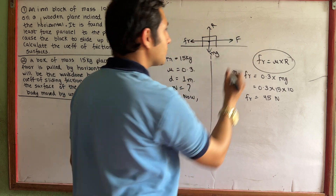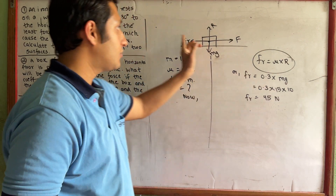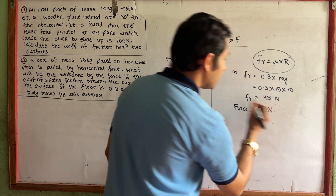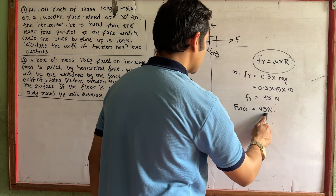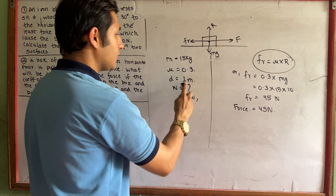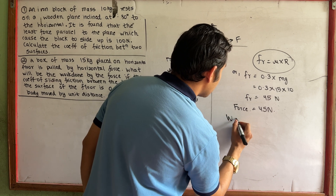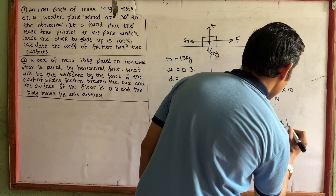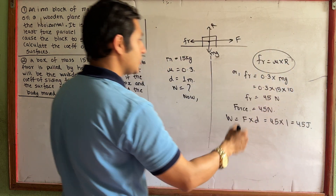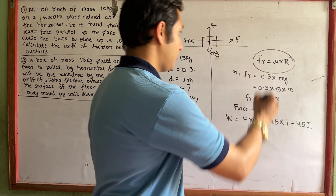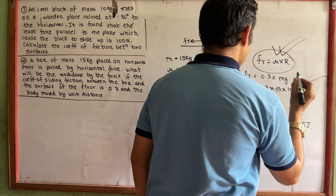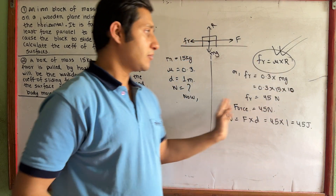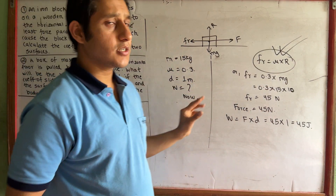So the frictional force equals 45 N. Force is equal to 45 N, so work done equals force into distance, which gives 45 joules. So question number two is solved — a simple numerical.